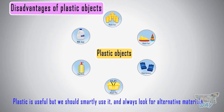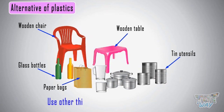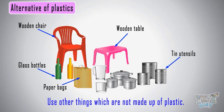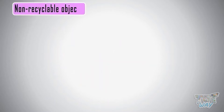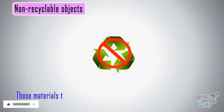So plastic is useful, but we should use it smartly and sparingly, and always look for alternative materials. Kids, always try to buy things that are not made of plastic but of some other material.